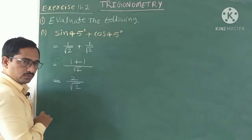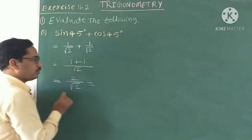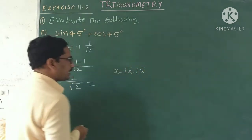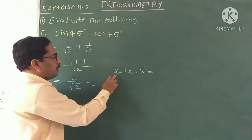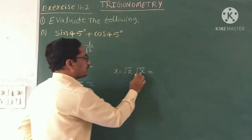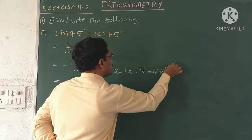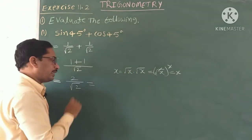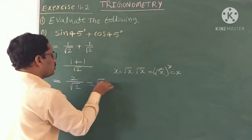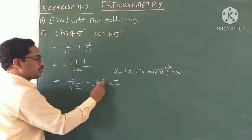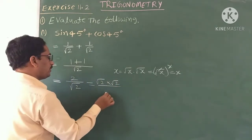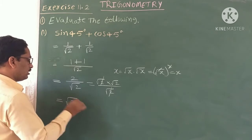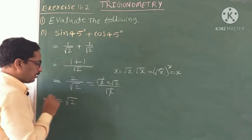So what is the value of 2 by root 2? We can write 2 as root 2 into root 2, because x equals root x into root x — root x squared cancels to give x. So 2 is written as root 2 into root 2, divided by denominator root 2. Root 2 cancels, and the answer is root 2. So sin 45° + cos 45° = root 2.